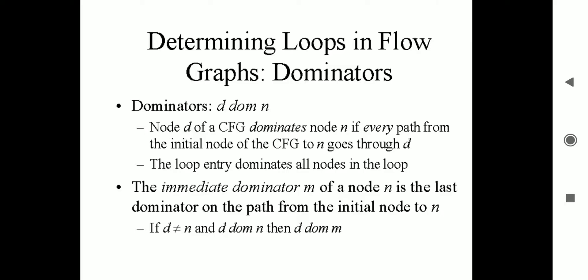The immediate dominator M of node N means M dominates N and is the last dominator on the path from the initial node to N. If D is not equal to N and D dom N, then D dom M. So if M dominates N, then D dominates M, because from the initial node we always travel through D, since M is the last node before N.